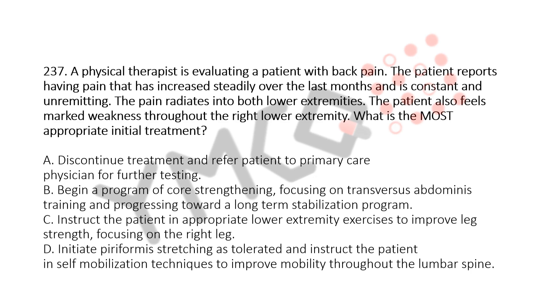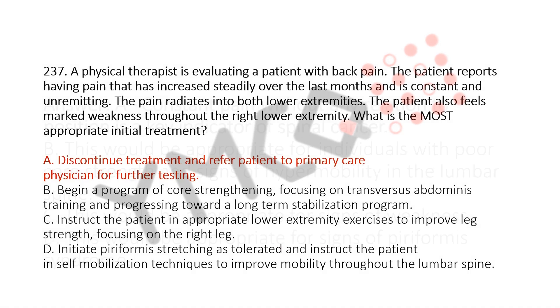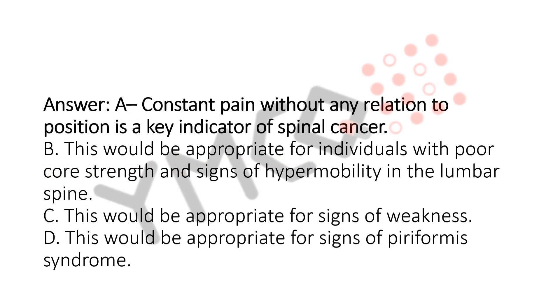And the answer is Option A: Discontinue treatment and refer patient to primary care physician for further testing. Explanation: Constant pain without any relation to position is a key indicator of spinal cancer. Option B would be appropriate for individuals with poor core strength and signs of hypermobility in the lumbar spine. Option C would be appropriate for signs of weakness. Option D would be appropriate for signs of piriformis syndrome.